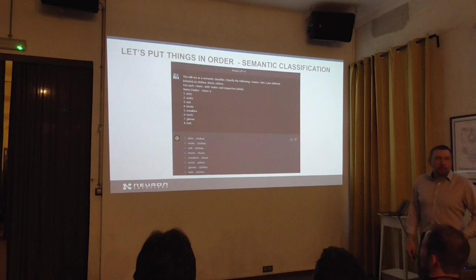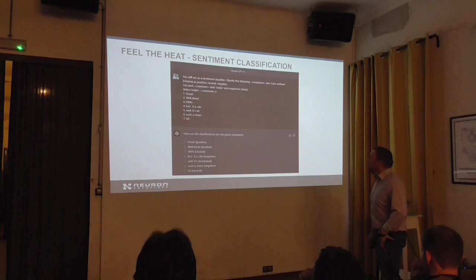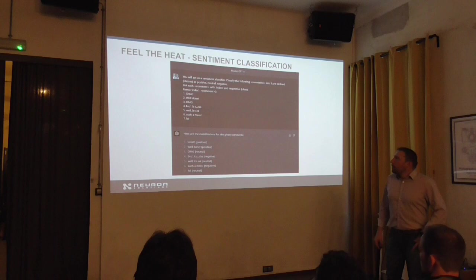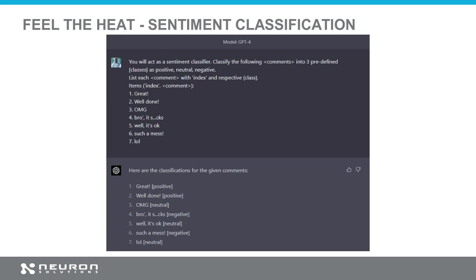So what else can we do? We can analyze not only the semantics of certain text but also the sentiment. For example, if we have lots of comments on a social media site or whatever, we can ask the model to classify those into predefined categories — it could be positive, neutral, or negative — and giving some comments, it can easily find which one is which. Look at the structure as well: I asked the model to use indexes, the words, and then a judgment. Interestingly, it found one of them neutral.